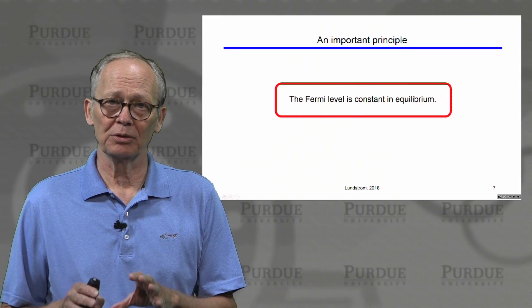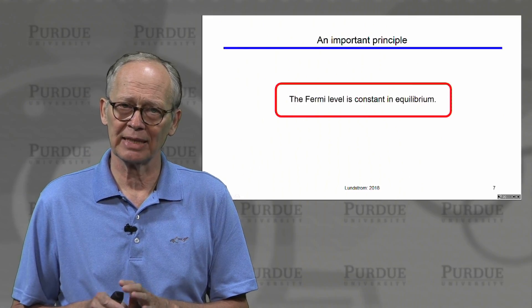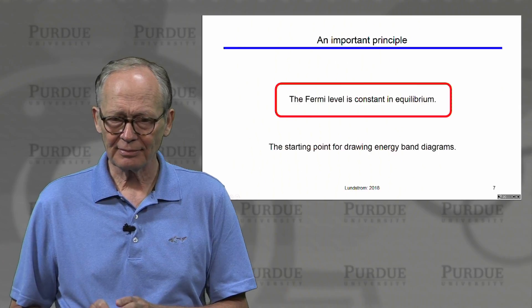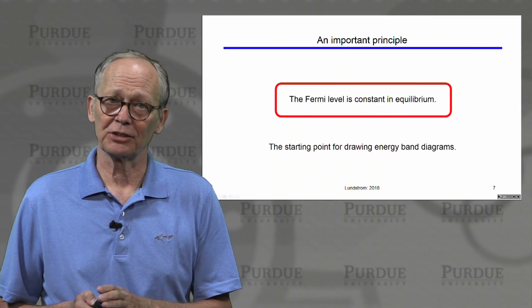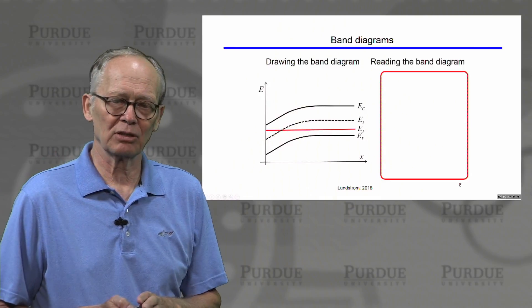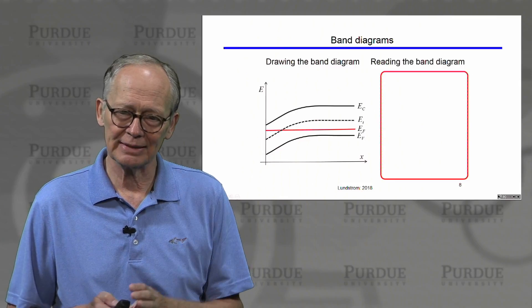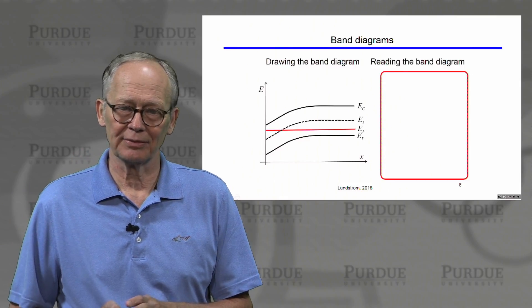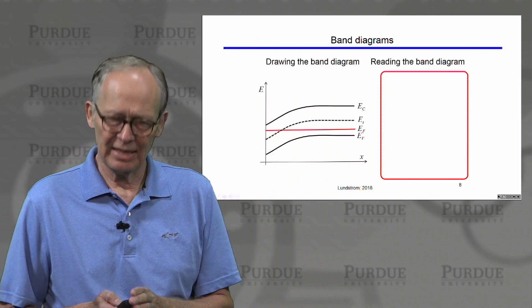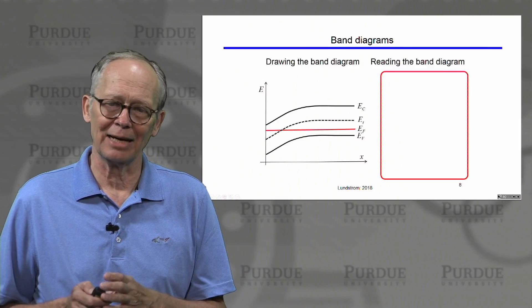One of the important principles when drawing equilibrium energy band diagrams is to remember that the Fermi level is constant. We use that as a starting point. This is what an energy band diagram might look like. We generally see bands bending sometimes, not always, in an interesting semiconductor device. We can read an energy band diagram like this and determine quantities of interest when trying to understand device operation.